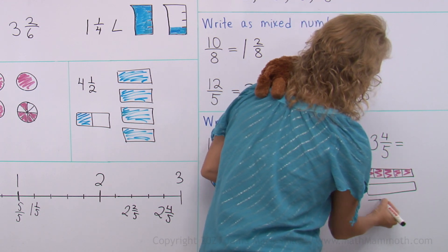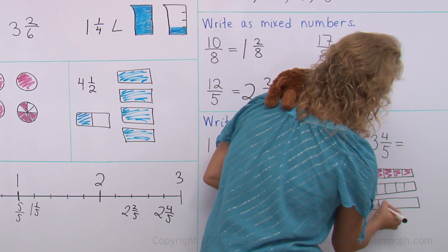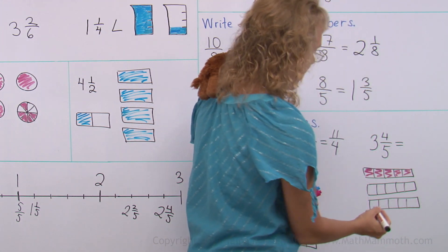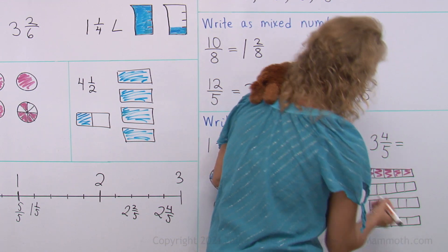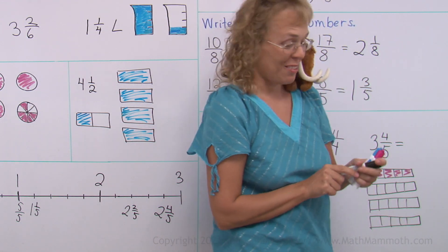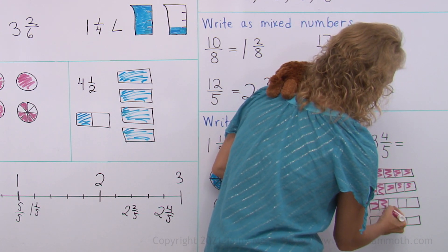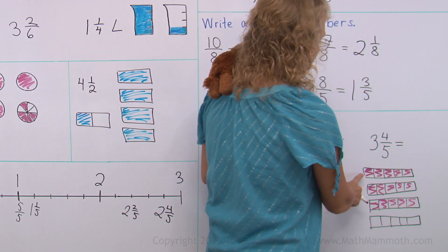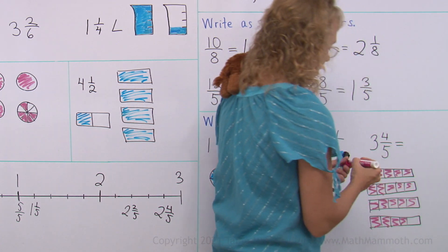You can probably figure this out before I get to finish drawing. Can you figure out how many fifths we will get in total once I get it all drawn and colored? Of course, this is the slow method. 5 fifths, 5 fifths, another 5 fifths, another 5 fifths. Looks like 3 times 5, right? And then 4 fifths in the last one.